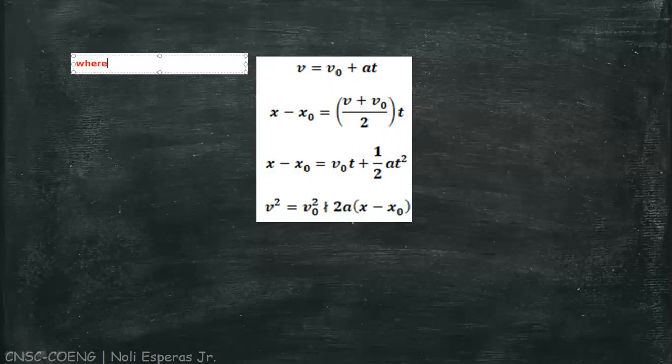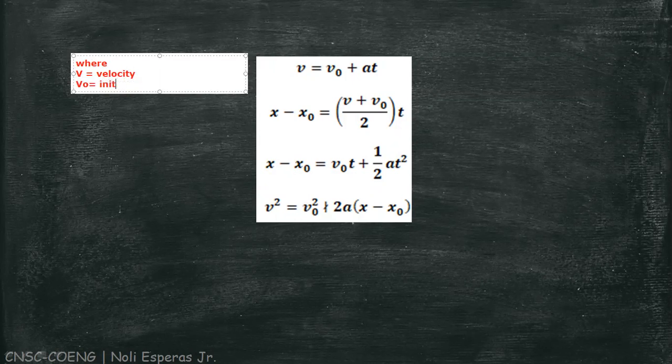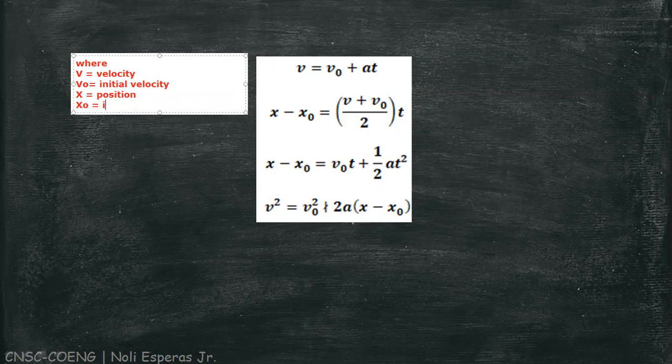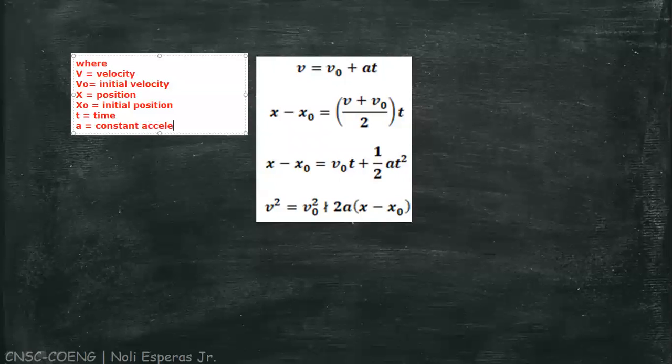Where v is the velocity, v₀ is the initial velocity, x is position, x₀ is the initial position, t is time, and a is constant acceleration.